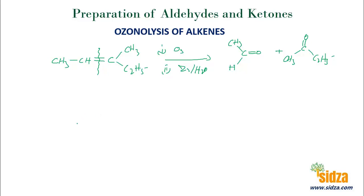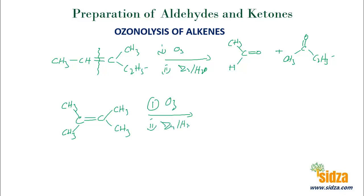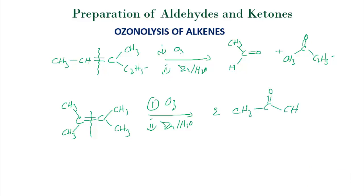If you have a symmetrical molecule — a carbon-carbon double bond with CH3 on both sides — and you first react with ozone to get an ozonide, then reduce with zinc and water, you break the molecule and put a C=O double bond on each carbon. Since the substituent groups are the same on both sides, the two resulting molecules are identical. You get two molecules of acetone (CH3-CO-CH3).